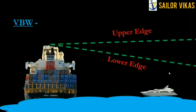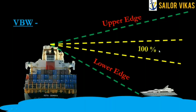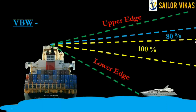In a radar beam, the center area has 100% intensity and energy. As you move further from the center, the intensity decreases — to about 80% and then down to 50%. This 50% intensity level is what defines the upper edge and lower edge of the radar beam.